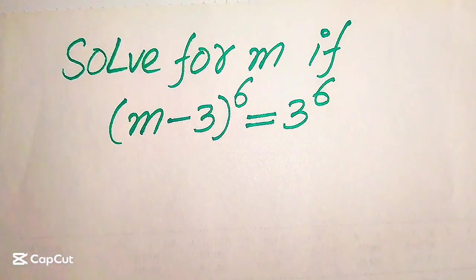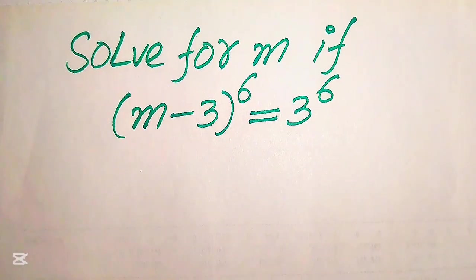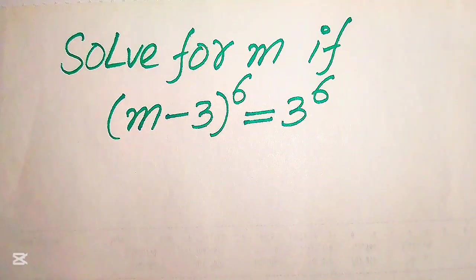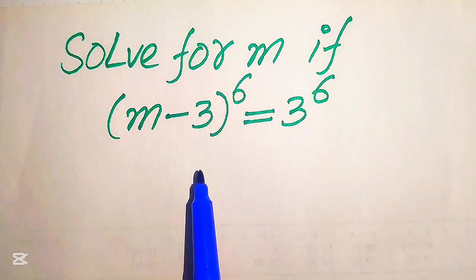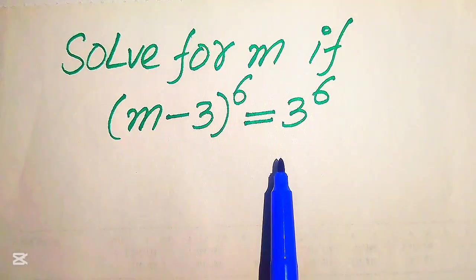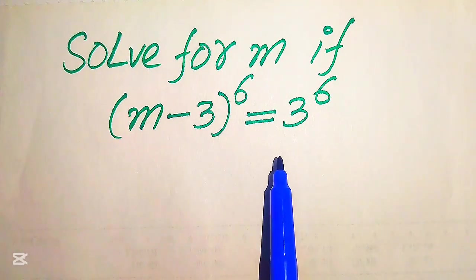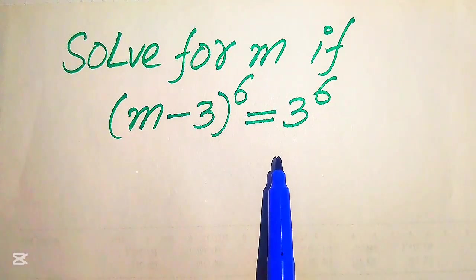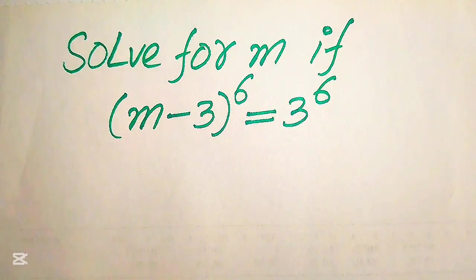Hello everyone, welcome to solve this nice math Olympiad algebra problem. Here we have (m minus 3) to the power of 6 equals 3 to the power of 6, and we solve this problem for the values of m.